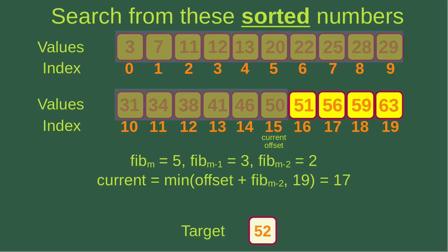Putting these Fibonacci numbers into the equation to find the current index: offset is now 15 and Fibonacci M-2 is 2, so 15 plus 2 is 17. Comparing 17 and 19, I get 17 as the smaller value, so 17 becomes the current index.